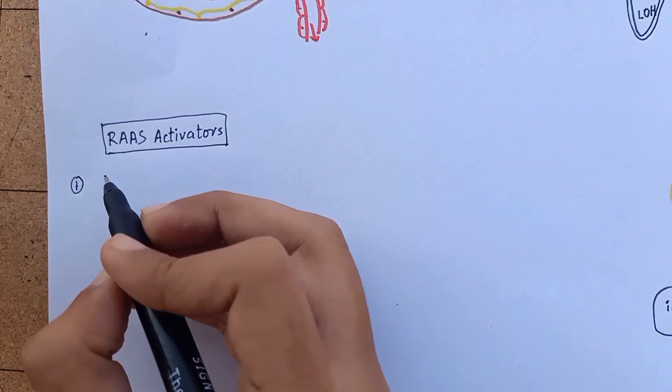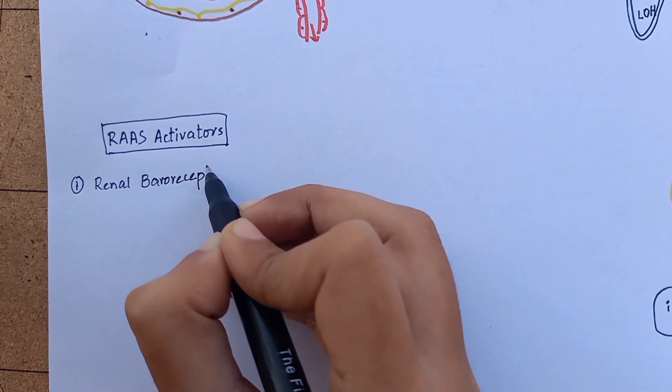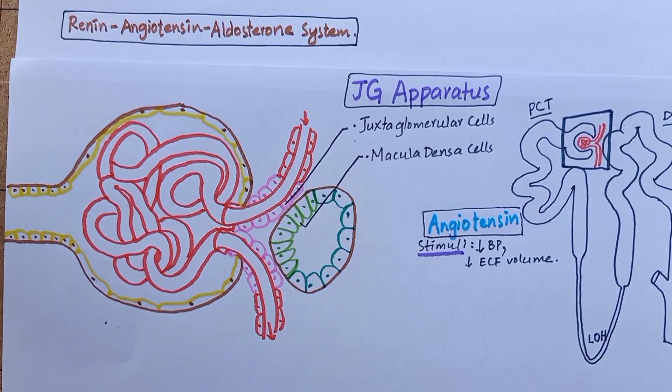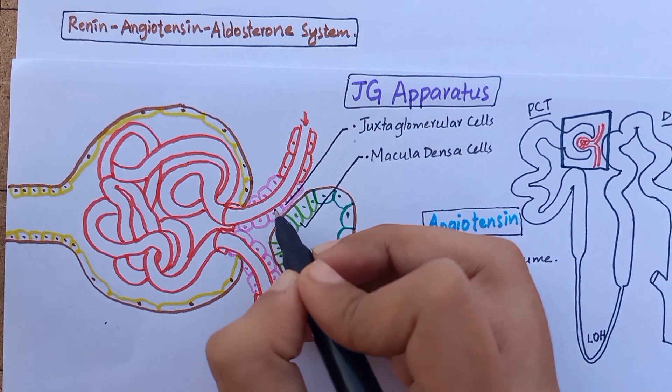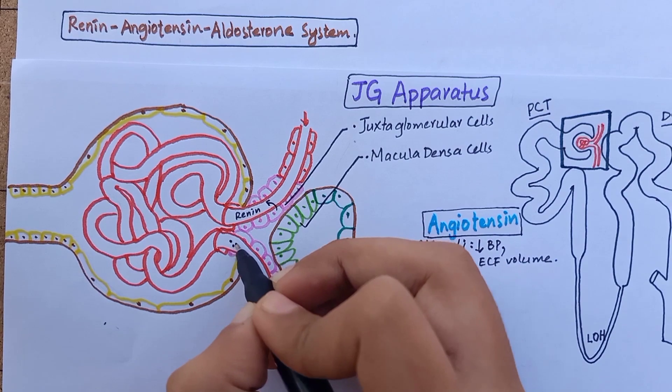The first mechanism of renin release is by renal baroreceptors. The juxtaglomerular cells of afferent arterioles are able to detect changes in blood pressure. Low blood pressure stimulates these cells to split prorenin molecule and release renin, because the goal of renin is to increase blood pressure.